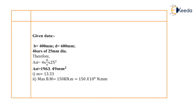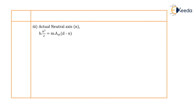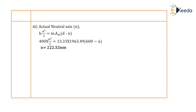Modular ratio is already given: M is equal to 13.33. Maximum bending moment is also given as 150 kNm, which is equal to 150 into 10 to the power 6 Newton mm. Now we will calculate the actual neutral axis N from the equation: b into N squared divided by 2 is equal to M into AST into (d minus N). With b equal to 400 mm, M equal to 13.33, AST equal to 1963.49 mm square, and effective depth 600 mm, we get N equal to 222.32 mm.